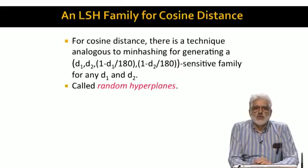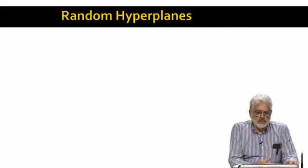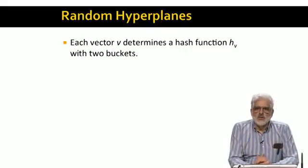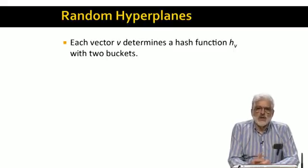Here's how we construct the random hyperplane hash functions. Each of these functions is defined by some vector v. Call the hash function associated with vector v, h sub v. And I should warn you that our notion of a vector is a little non-standard. We are really picking a direction for a vector, but not a scale factor. That is, if you double the components of a vector v, we regard that as the same vector.